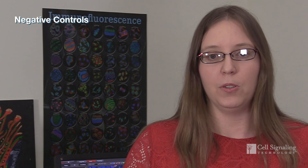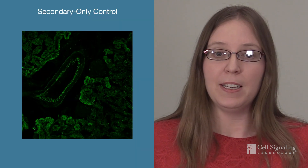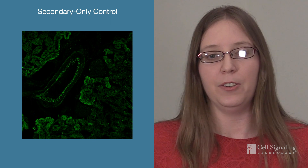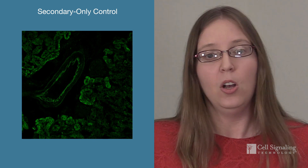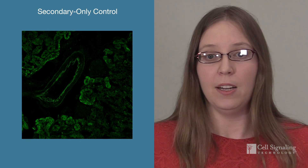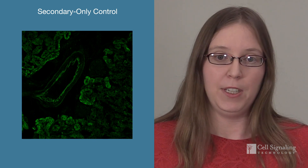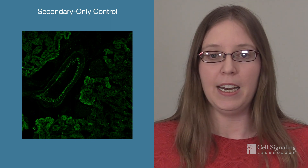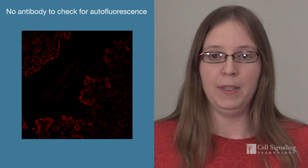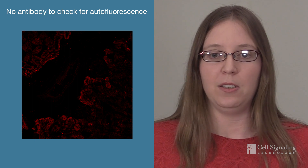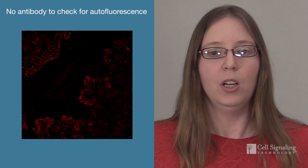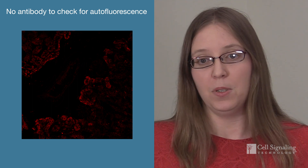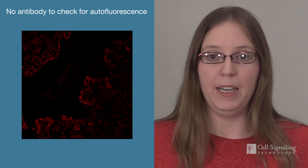The third class of controls are negative controls. Performing a secondary-only control can give you an indication if your sample type is generally sticky or contains cross-reactive immune cell types or Fc receptors, either of which will contribute to nonspecific background staining. PBS-only treatment can be used to assess autofluorescence in your sample, which could be from endogenous sources, or from sample processing steps, or a combination of both.